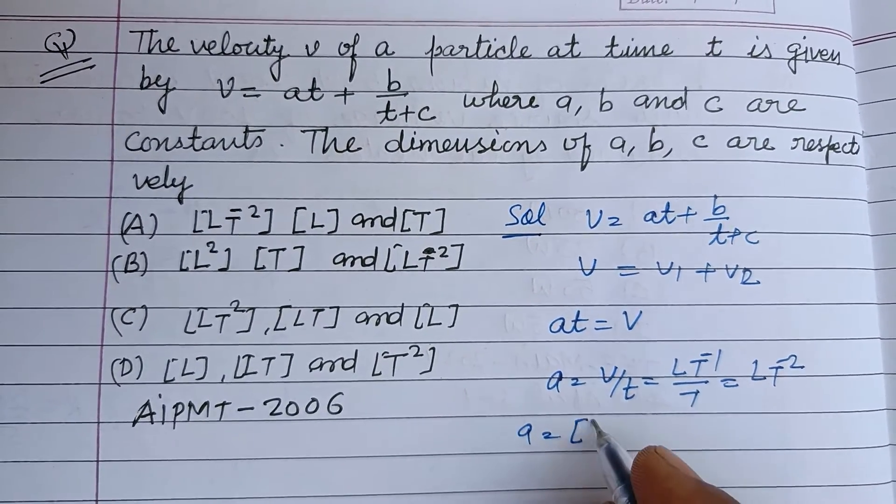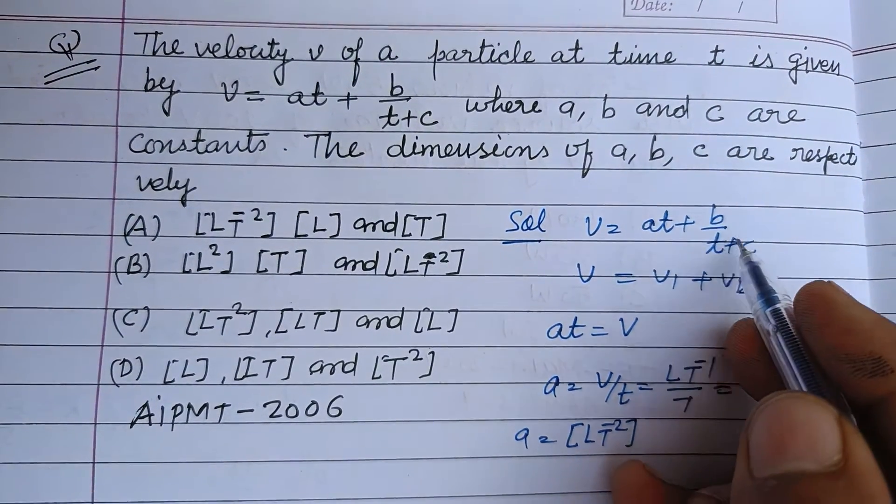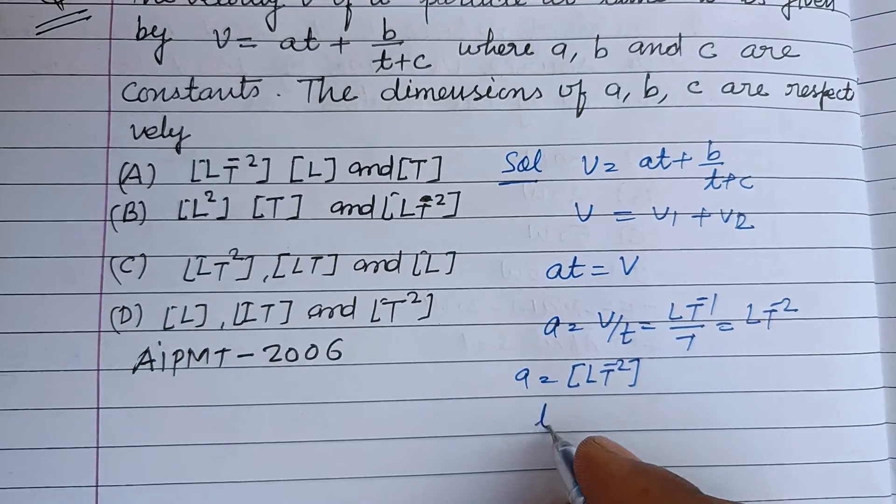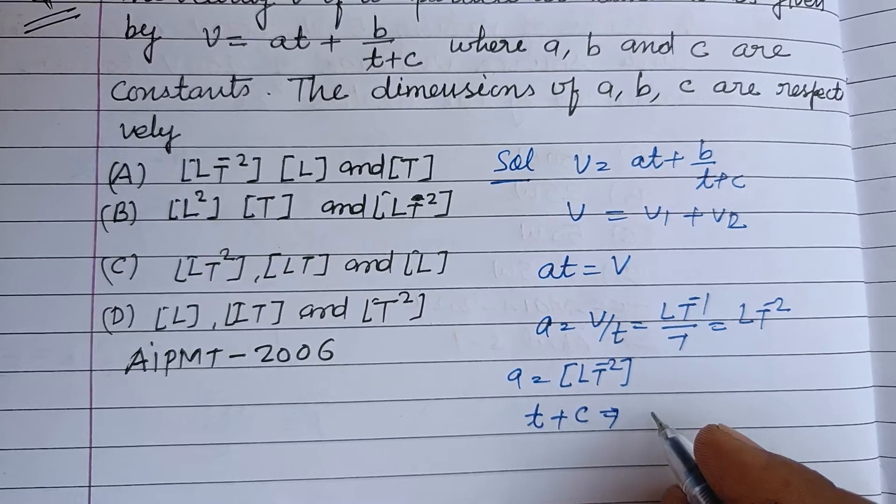And here t + c, same quantity added. So t + c, this is time, therefore c = T. C is the dimension of T.